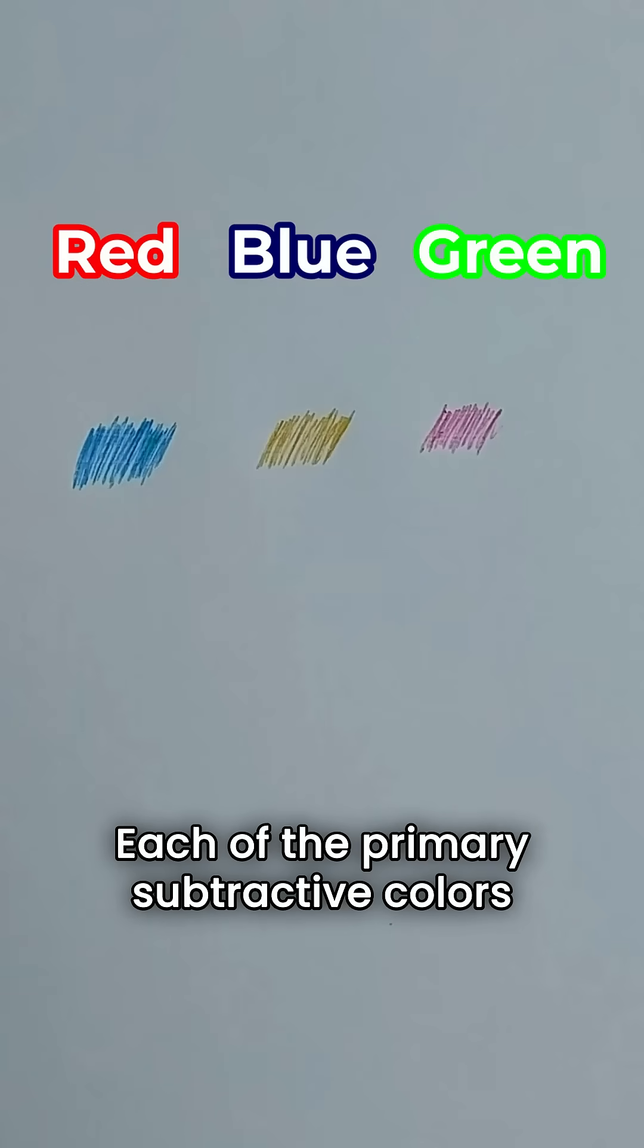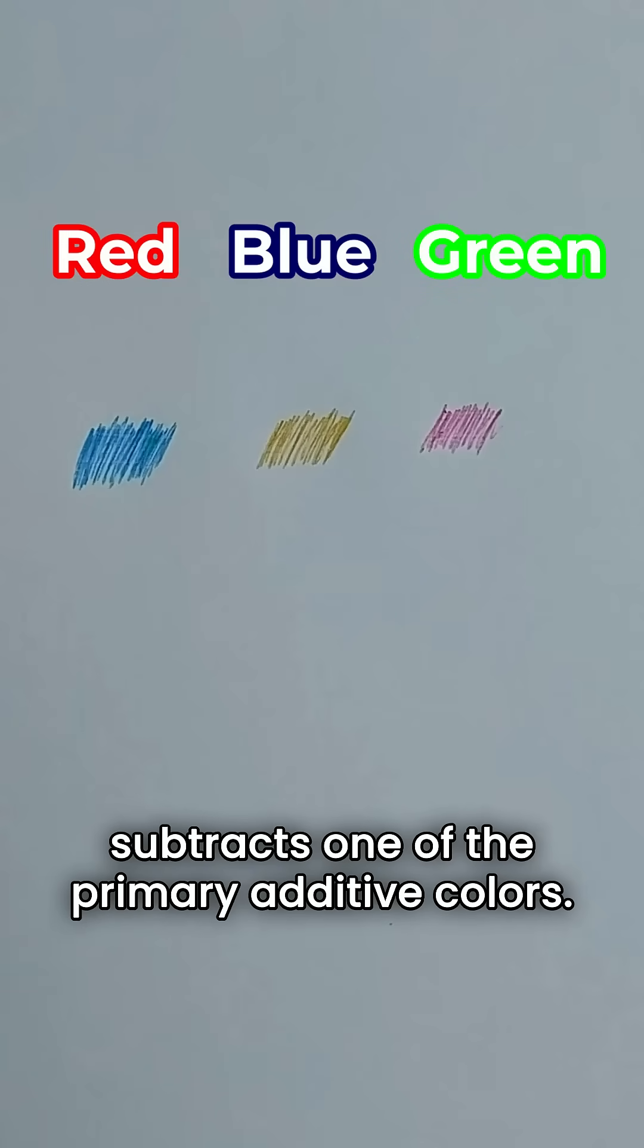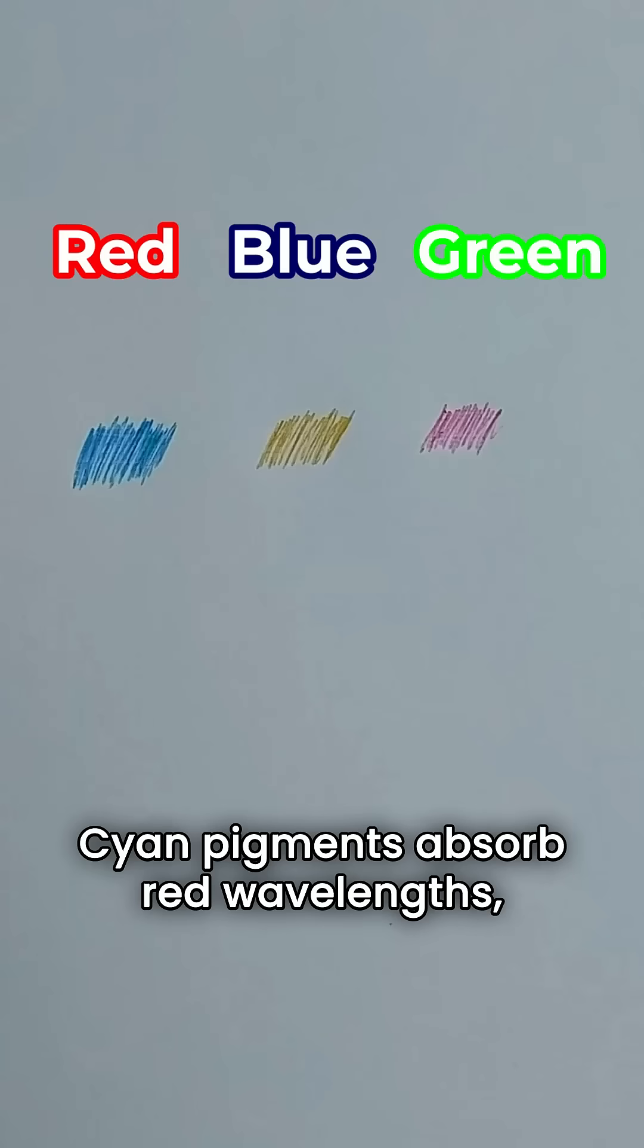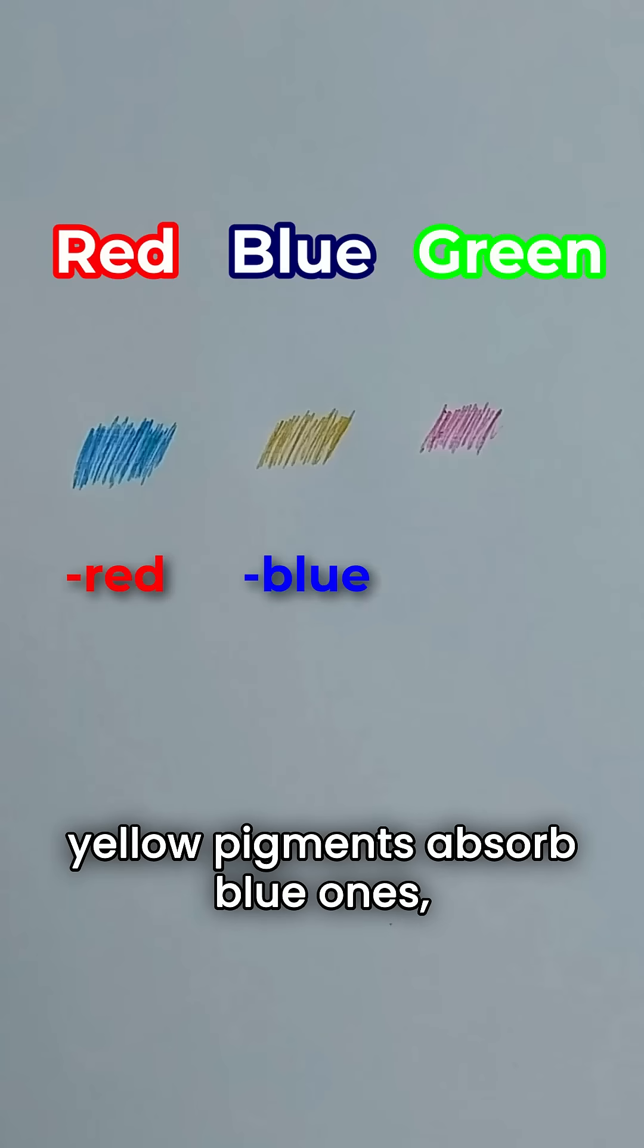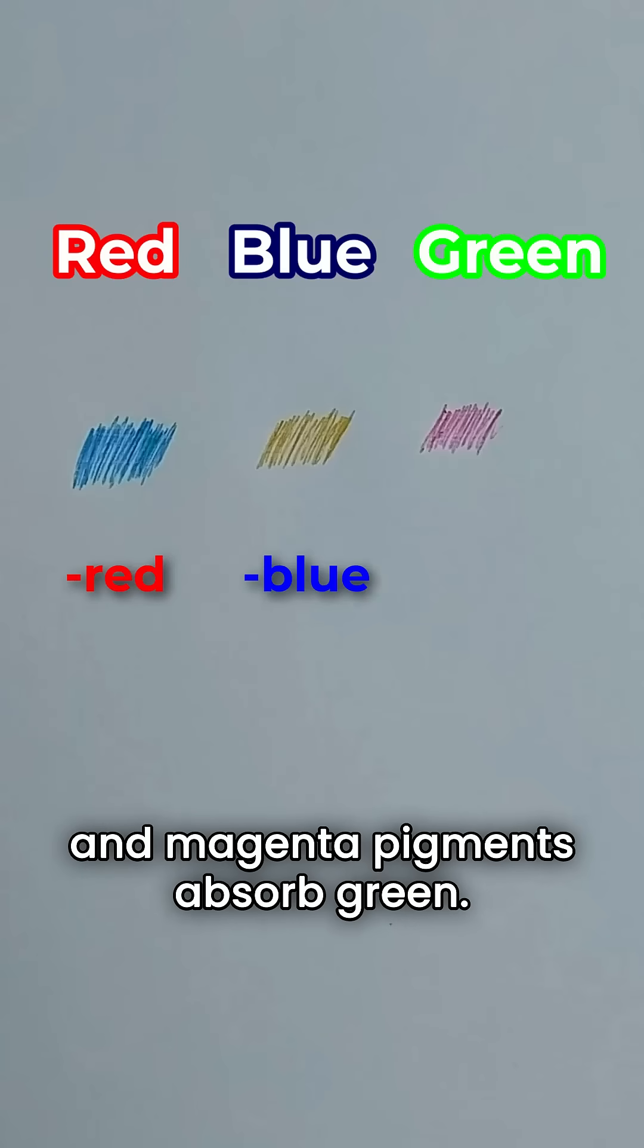Each of the primary subtractive colors subtracts one of the primary additive colors. Cyan pigments absorb red wavelengths, yellow pigments absorb blue ones, and magenta pigments absorb green.